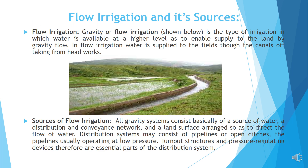Flow irrigation and sources. Gravity or flow irrigation, as you can see in the picture below, is a type of irrigation in which water is available at a higher level so as to enable supply to the land by gravity flow. In flow irrigation, water is supplied to the fields through the canals taking off from headworks.